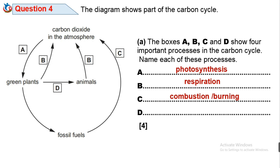D has to do with the process by which animals feed and gain nutrients from plants. Therefore D is called nutrition or feeding. Nutrition is the process by which animals feed and gain nutrients from plants. All these processes are captured in the carbon cycle diagram provided.